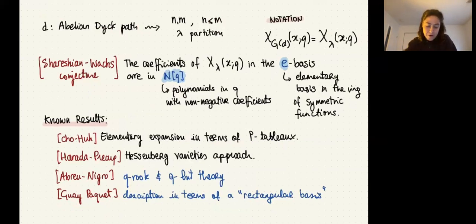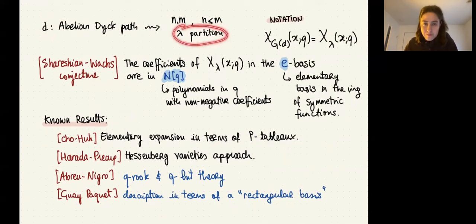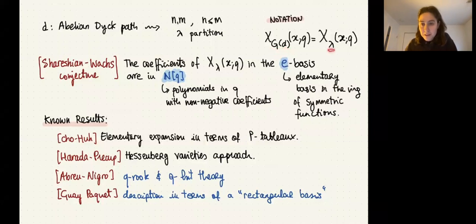For an abelian path, we can keep all the relevant information just by remembering n, m, and the partition λ — with n ≤ m without loss of generality. To simplify notation, instead of writing the full Dyck path and its associated graph, I'll just write λ and assume we all have n and m in mind.